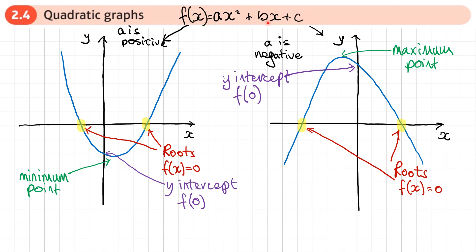Quadratics are going to be in the form ax² + bx + c. If the coefficient of x² is positive, you're going to have a U-shaped quadratic — it goes down and then comes back up again. If the coefficient of x² is negative, it will be an N-shaped quadratic — it goes up and then comes back down.